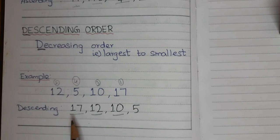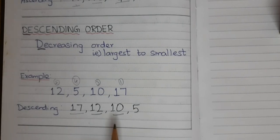Right. So, the answer is, for the descending order is 17, 12, 10 and 5.